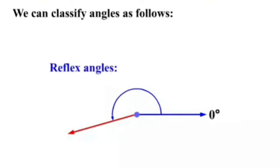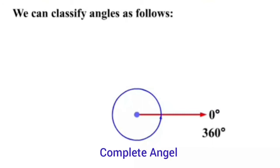A reflex angle measures between 180 degrees and 360 degrees. An angle measuring exactly 360 degrees is called the complete angle or full angle.